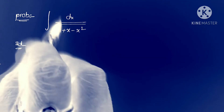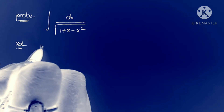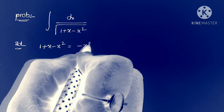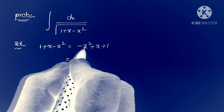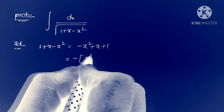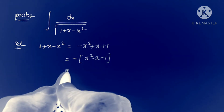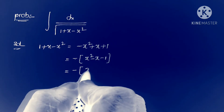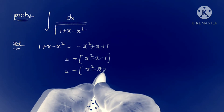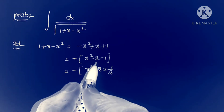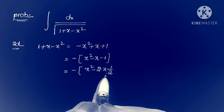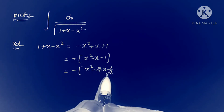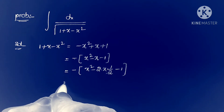To solve this, we take the expression 1 plus x minus x squared and write it in order as minus x squared plus x plus 1. Taking the x squared coefficient, which is minus 1, as common, we get minus of x squared minus x minus 1. We rewrite the middle term as 2 times x times 1 by 2, converting it to the form 2ab.